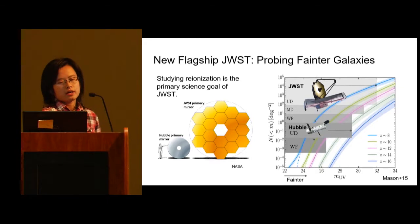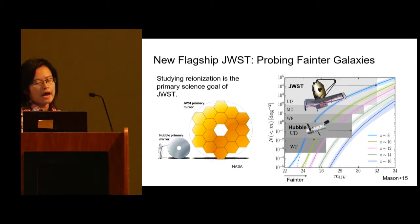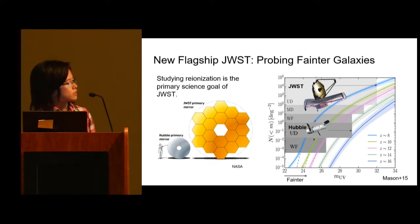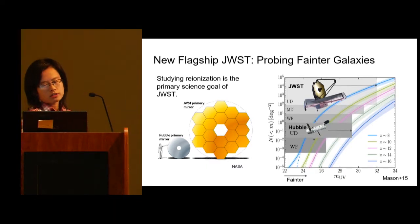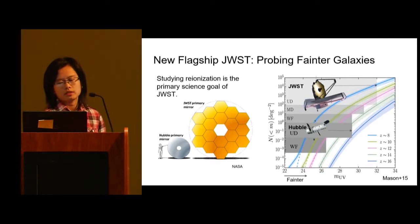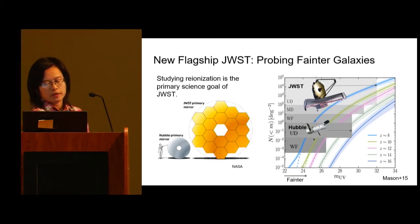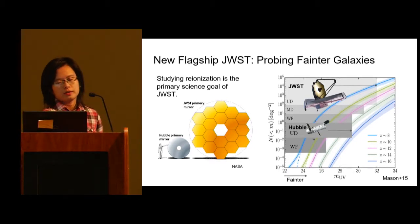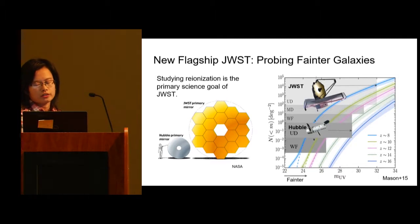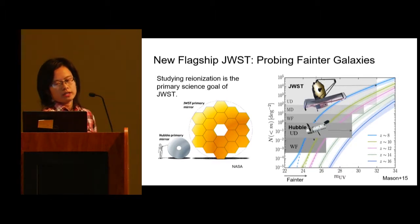The left side shows you the relative size of the primary mirror of JWST as compared to Hubble. It's three times as large an aperture as Hubble and offers unprecedented sensitivity to probe faint galaxies. On the right is the luminosity function, showing JWST will push the detection limit further by six magnitudes.